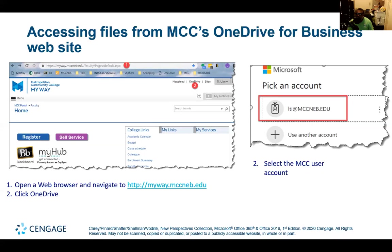If you're interested in finding it, look at number two up here — you're in MyWay. If you look at the little flag that shows number two, it shows OneDrive. That's your OneDrive for Business. So open the web browser and navigate to MyWayMCCNEB.edu. Click on OneDrive and select MCC user account.